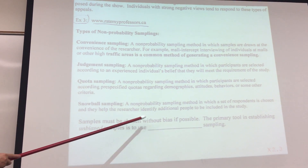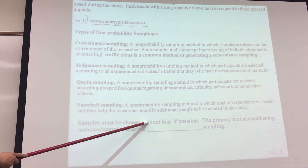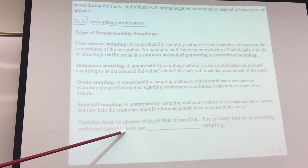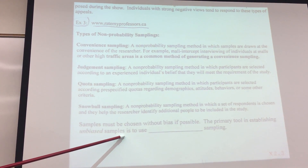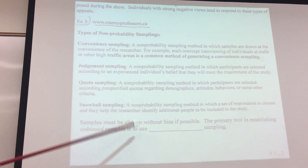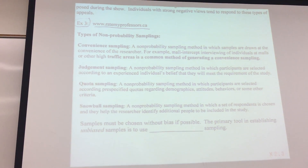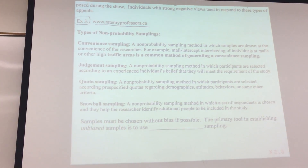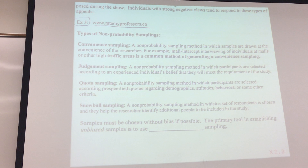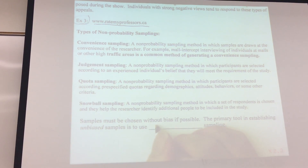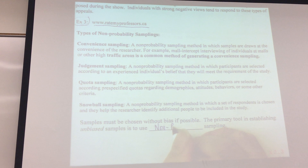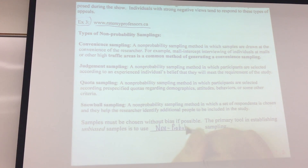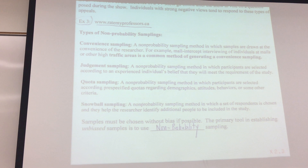Samples must be chosen without bias if possible. The primary tool in establishing unbiased samples is to use known probability sampling.